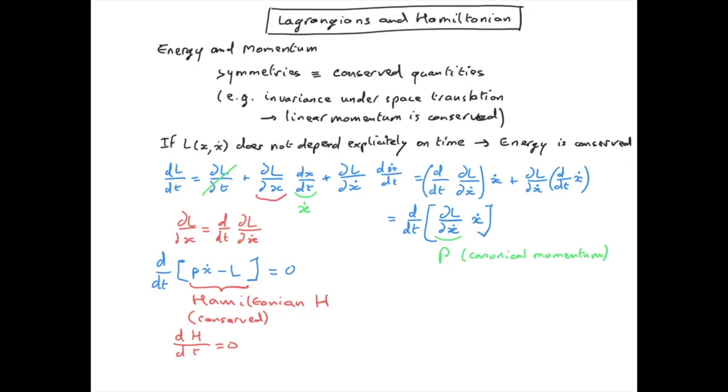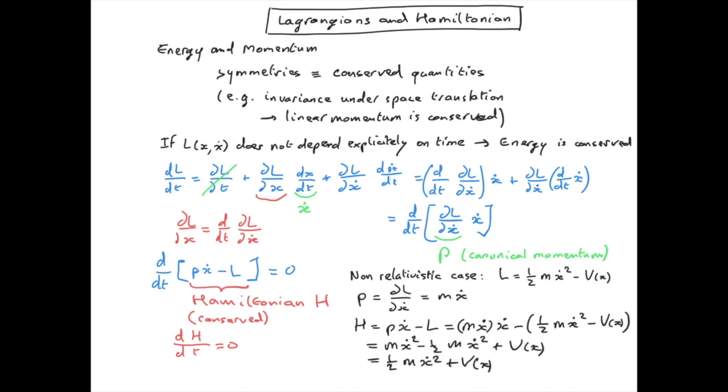Let's forget about relativity for one minute and look at the non-relativistic case. In the non-relativistic case, the momentum is given by mẋ and the Hamiltonian is given by pẋ - L. We recognize that this is the sum of the kinetic energy plus the potential energy, and therefore that's what we call the total energy of the system.